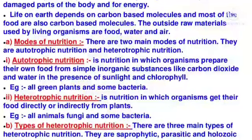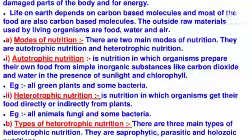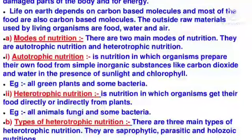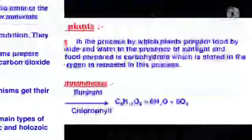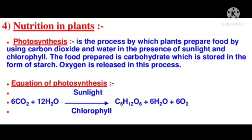There are three main types of heterotrophic nutrition: saprotrophic, parasitic, and holozoic nutrition. Photosynthesis is the process by which plants prepare food by using carbon dioxide and water in the presence of sunlight and chlorophyll. The food prepared is carbohydrate, which is stored in the form of starch. Oxygen is released in this process.